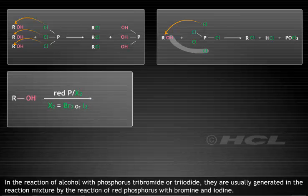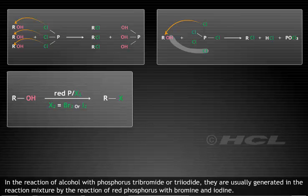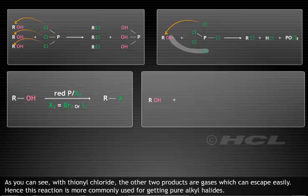In the reaction of alcohol with phosphorus tribromide or triiodide, they are usually generated in the reaction mixture by the reaction of red phosphorus with bromine and iodine.